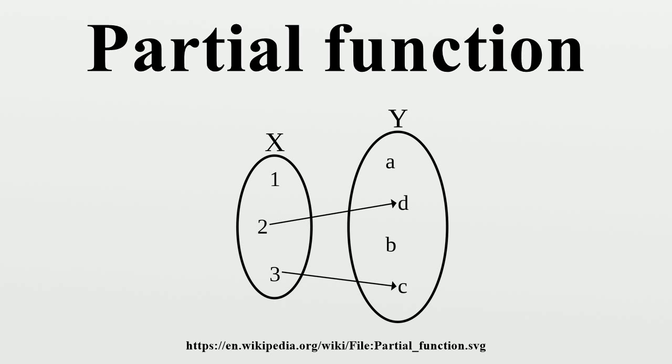In category theory: When considering the operation of morphism composition in concrete categories, the composition operation is a total function if and only if the category has one element. The reason for this is that two morphisms f and g can only be composed as g ∘ f if